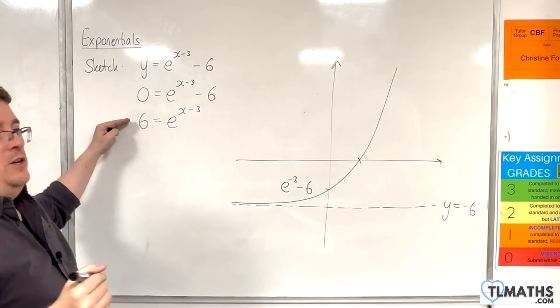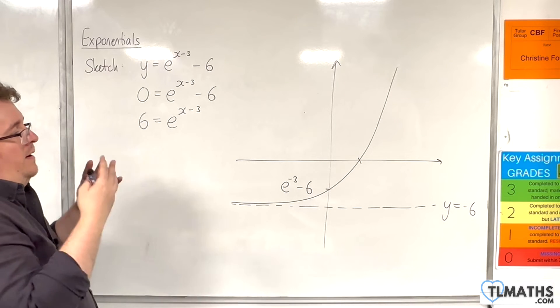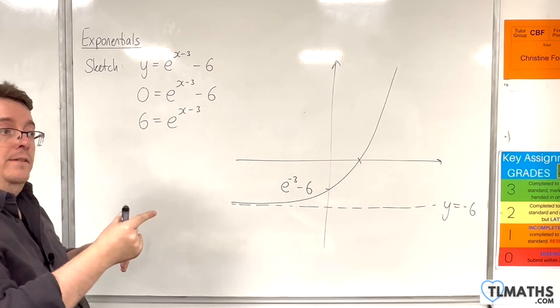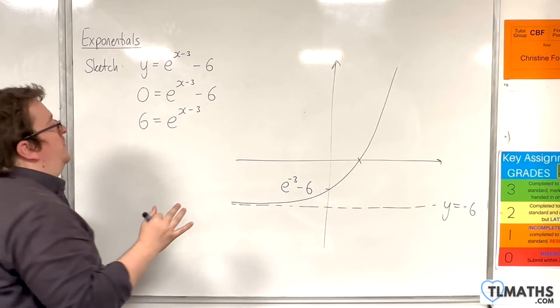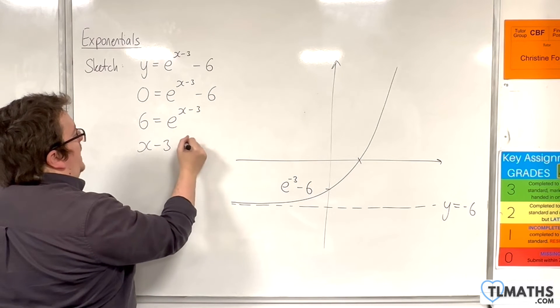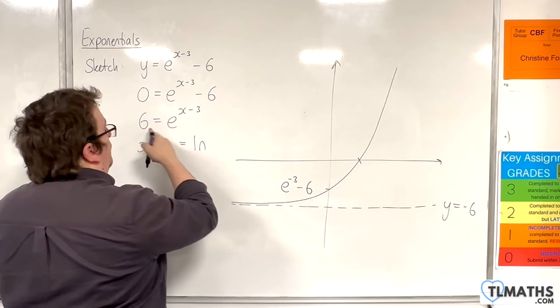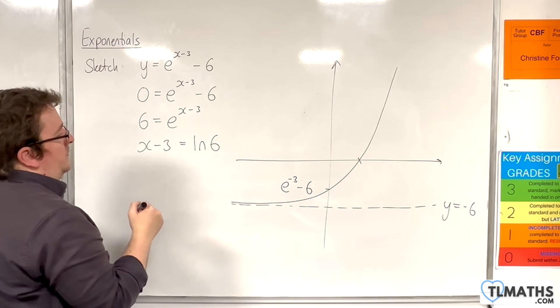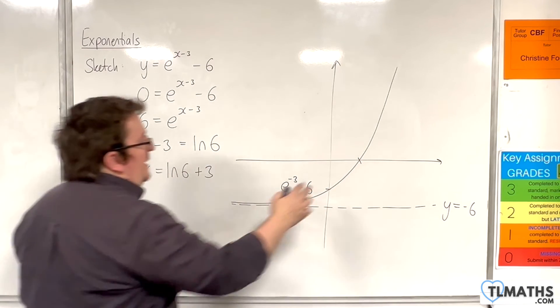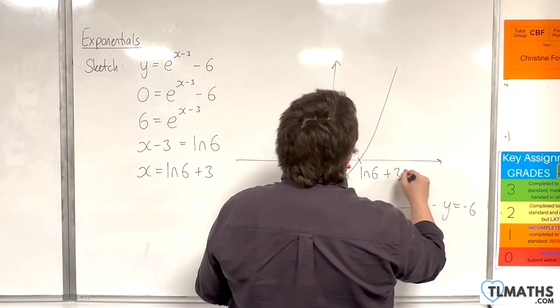And now we want to go from exponential form to logarithmic form. In the previous video, I introduced that you could write log base e as LN. So, I want to get into the habit of doing that. So, x take away 3 is log base e, so LN, of 6. And then, add the 3 to both sides. So, the exact form for this point is natural log of 6 plus 3.